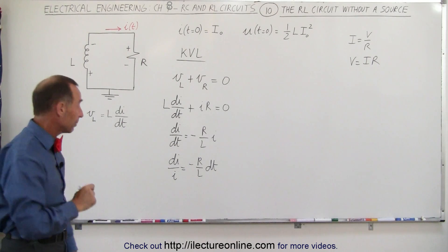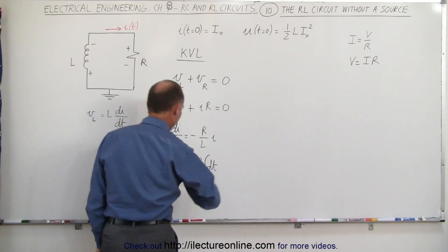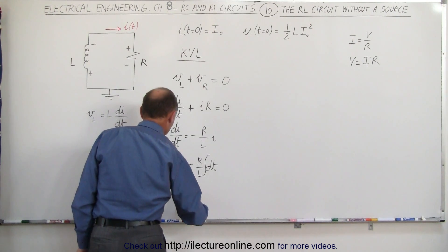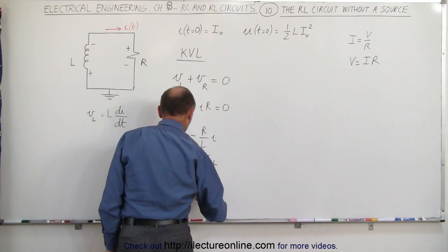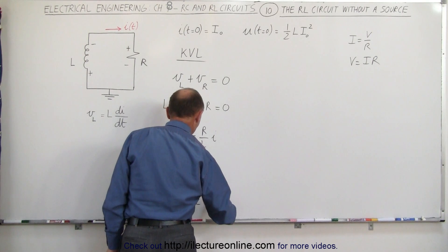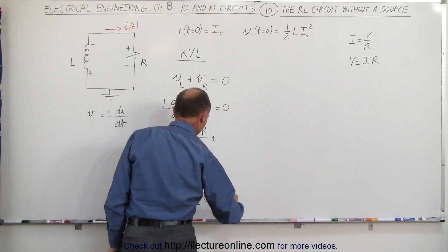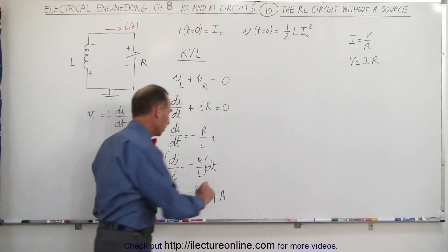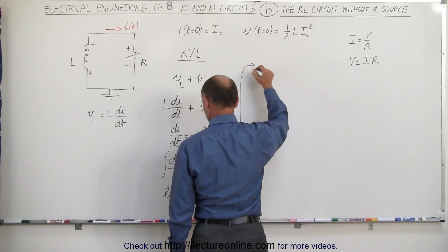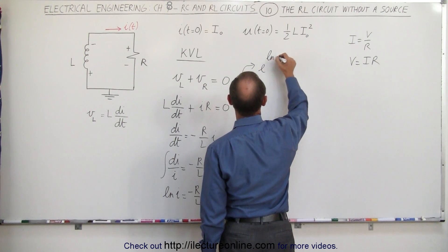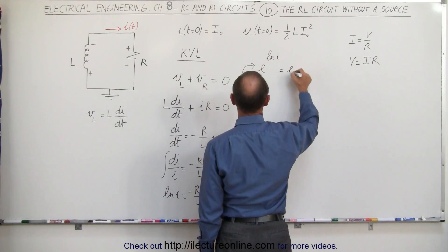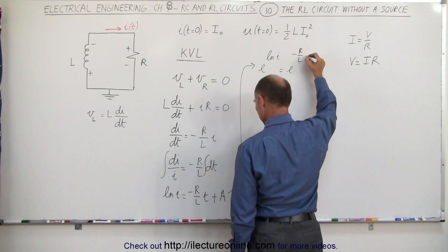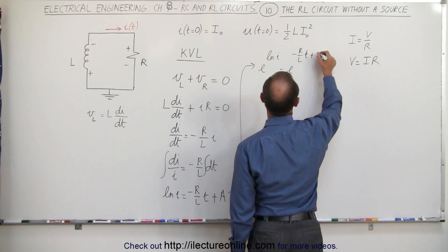Now we're ready to integrate both sides. Integrating the left side and the right side gives us the natural log of I is equal to minus R over L times time plus a constant of integration, let's call it A. We now take the antilog of both sides, which means we write e to the natural log of I equals e to the quantity minus R over L times t plus A.